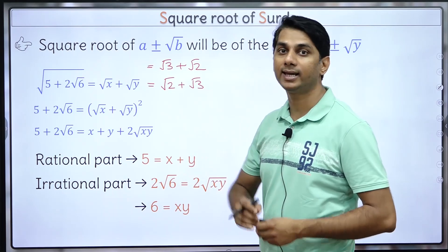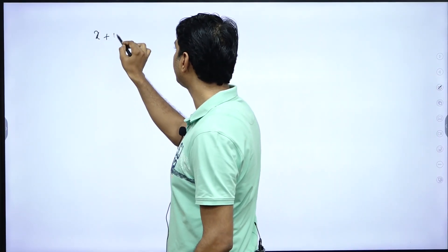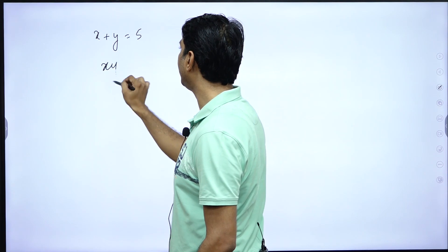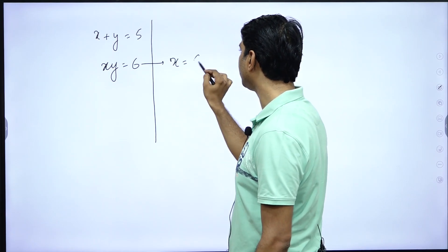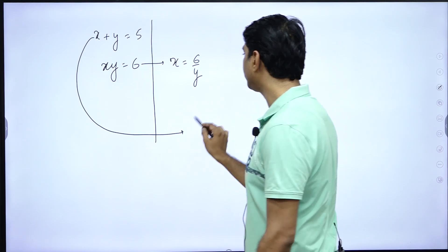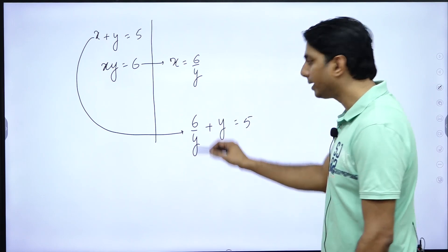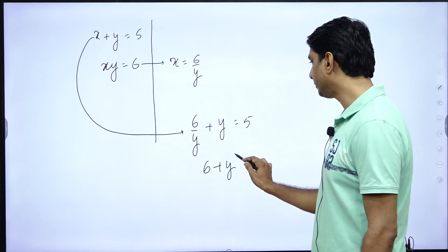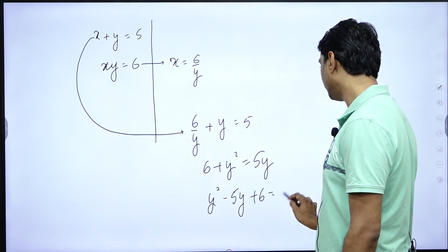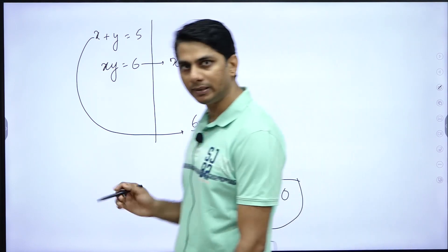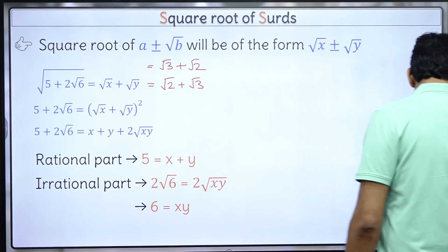You might have a doubt: what if the numbers are not easy to figure out? Then it's simple. Using x + y = 5 and x × y = 6, substitute x = 6/y into the first equation: 6/y + y = 5. This gives a quadratic: y² - 5y + 6 = 0. You can solve it by splitting the middle term or using the quadratic formula.